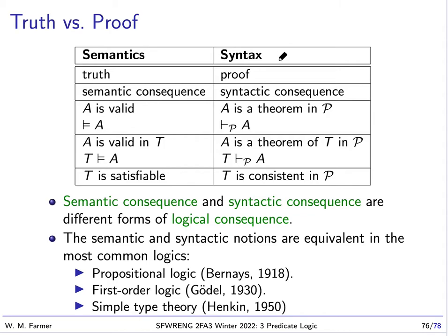The reason we say syntactic here is because proving is a syntactic operation. We're basically taking expressions, these proof trees are proofs, and we're manipulating them. So truth corresponds to proof, and semantic consequence corresponds to syntactic consequence.